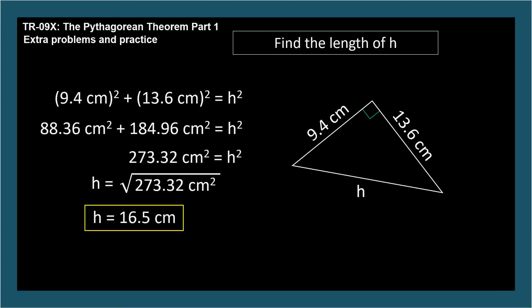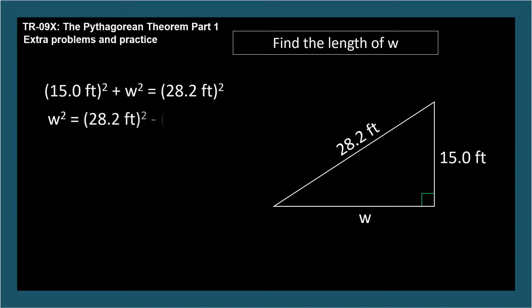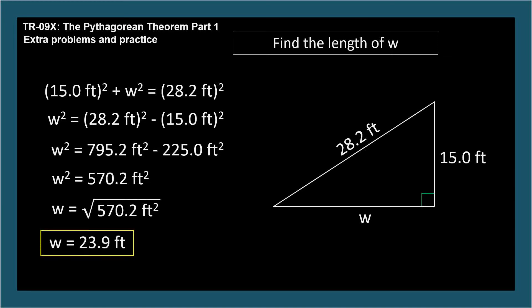Find the length of w, which is the short side, not the hypotenuse. We can rearrange the Pythagorean theorem to isolate the non-hypotenuse side: w² = hypotenuse² − other side². Square the terms, subtract, and take the square root. w equals 23.9 feet.